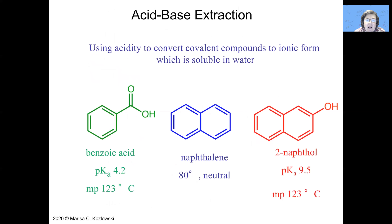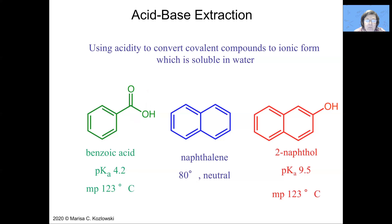Let's go through an example. I have three compounds mixed together: benzoic acid with a pKa of 4.2, naphthalene which has no acidic functional groups, and naphthol with a pKa of 9.5. In the forms illustrated here, these are all soluble in organic solvents — in particular, they will all dissolve in diethyl ether. So we can't separate them on that basis. However, if we were to make salts of the compounds that can be deprotonated, those salts would be selectively soluble in water.